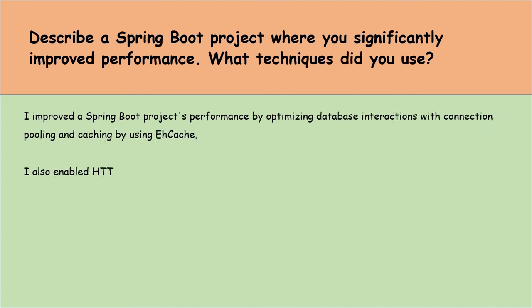After successful registration, your Spring Boot application needs to send a welcome email to the user. Describe how you would send emails to registered users. First, ensure the Spring Boot starter mail dependency is in the project's pom.xml. Next, in the application.properties file, set up mail server details like host, port, username and password. Then write a service class that uses JavaMailSender to send emails, crafting the welcome email content and using the send method to dispatch it. Finally, after a user successfully registers, call the mail service from within the registration logic to send the welcome email.